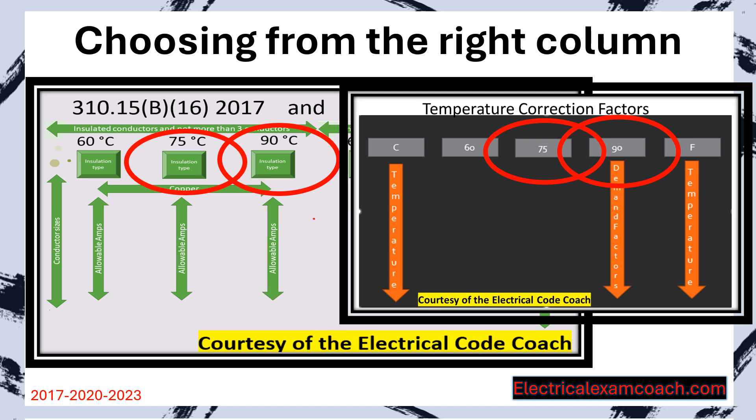One thing I want to mention at this point is NM Cable, which is Romex — that's just a trade name, along with Southwire and others. In the codebook it's called NM Cable. For the purpose of bundling adjustments and temperature corrections, you are allowed to choose from the 90 degrees C column when doing those calculations.